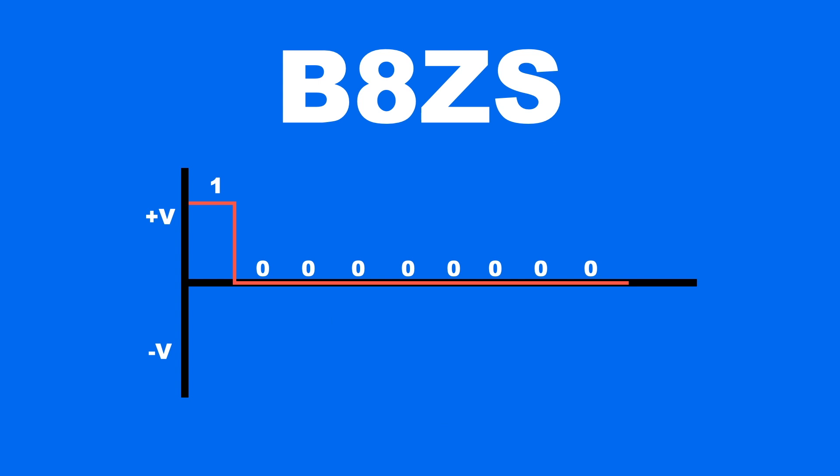If we have a long sequence of zeros, it can cause issues with regular bipolar AMI due to loss of synchronization. B8ZS solves this by replacing sequences of 8 consecutive zeros with a special pattern.